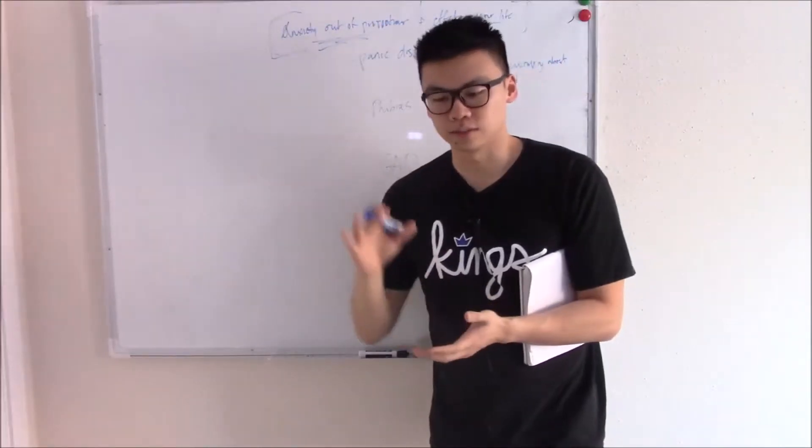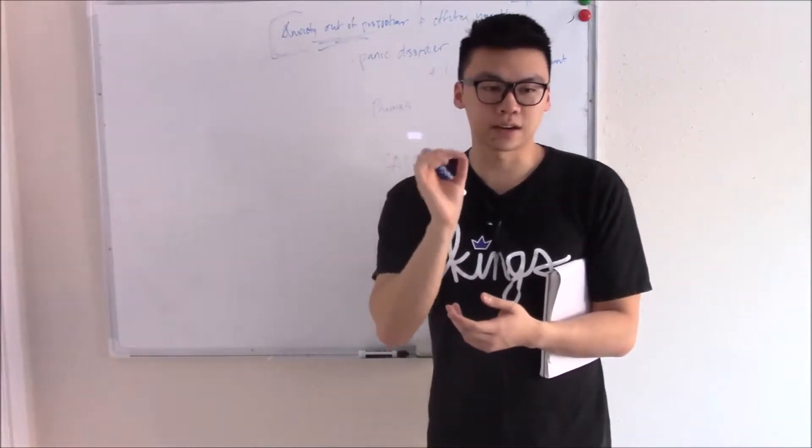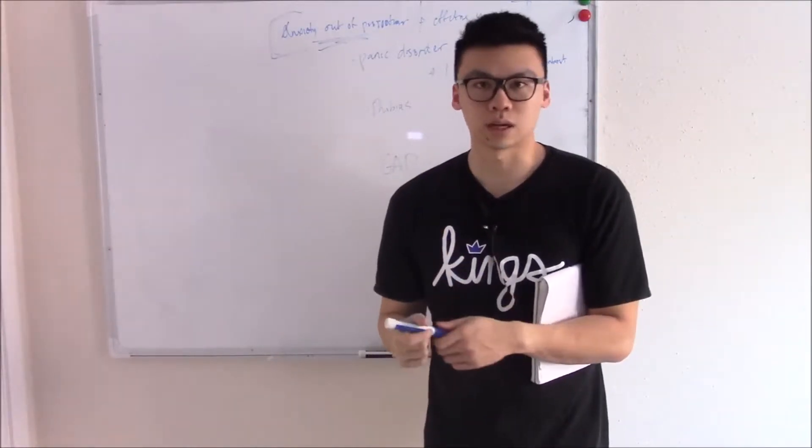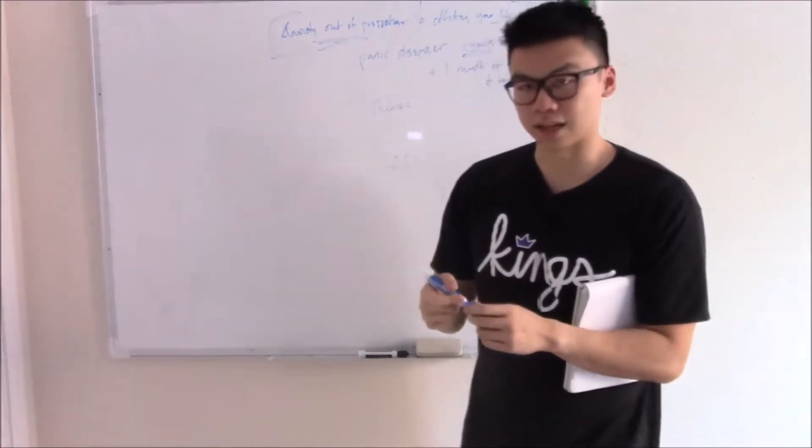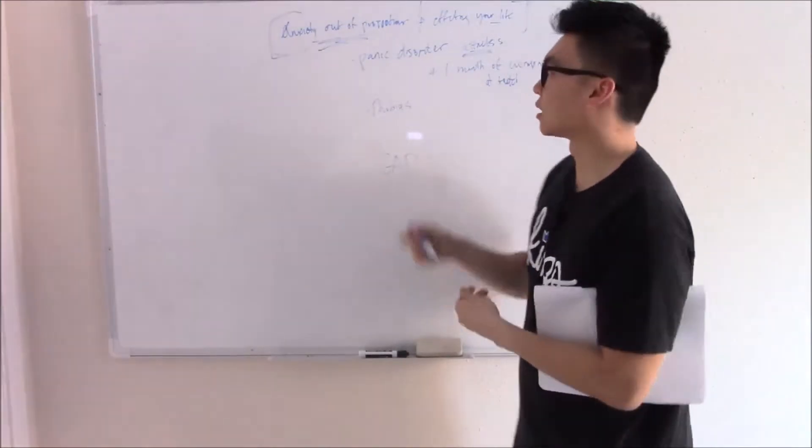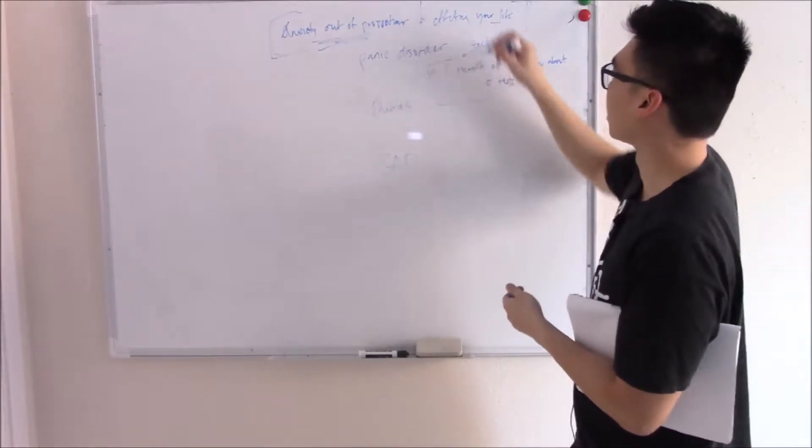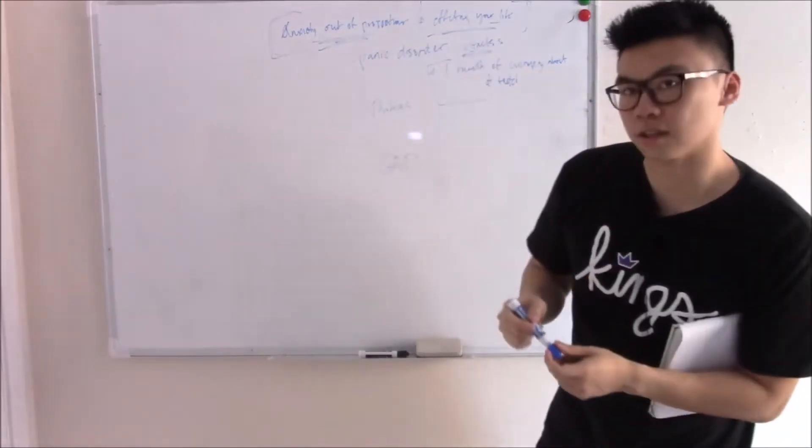I'm going off on a tangent, but these are very common trick questions and they catch students left and right because students will just see panic attacks and then jump to panic disorders, even though they're missing the second half of the criteria. One month of worrying. The fact that it's affecting your life.